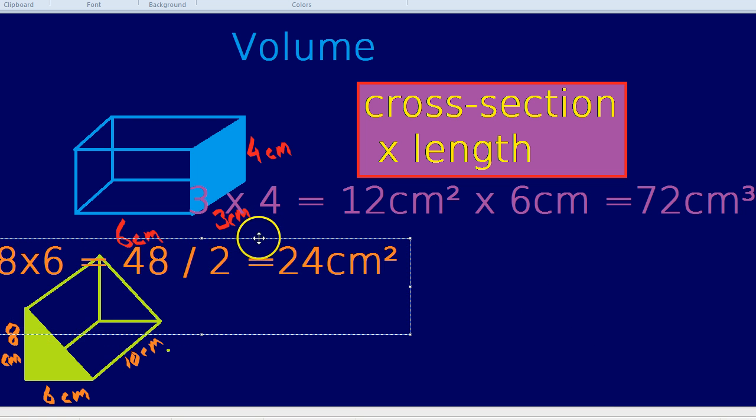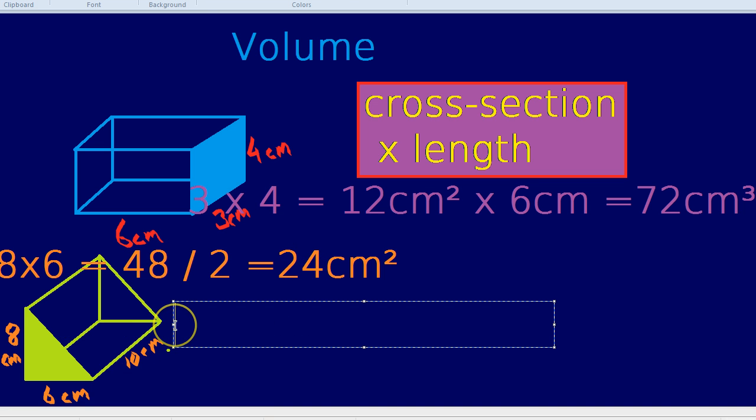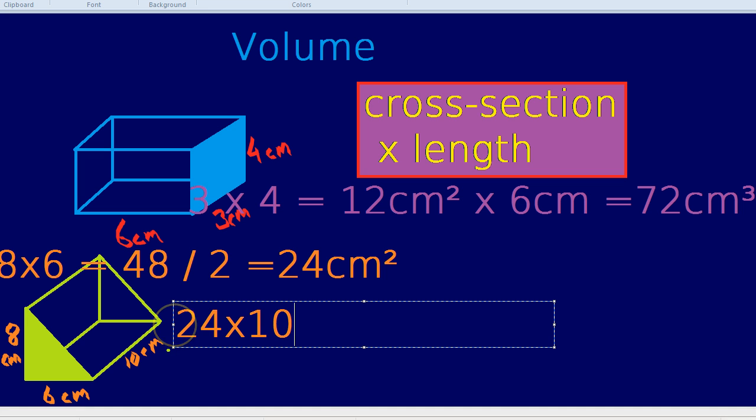What do we do now? Now, once we get the area of the cross-section, we times that by the length of the shape. In this case, it's 24 times by 10. That will give us 240. And can you think of the units? It would be centimeters cubed.